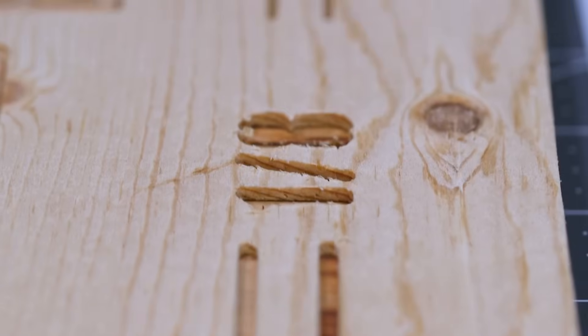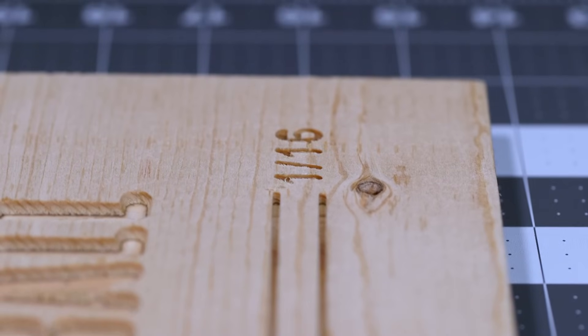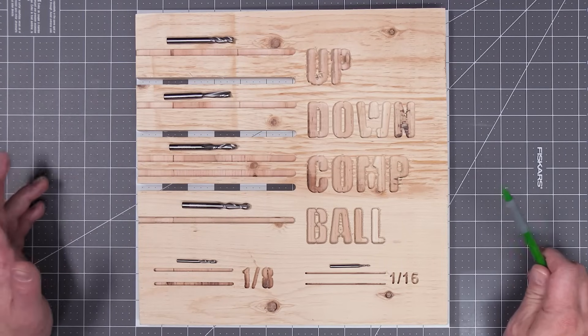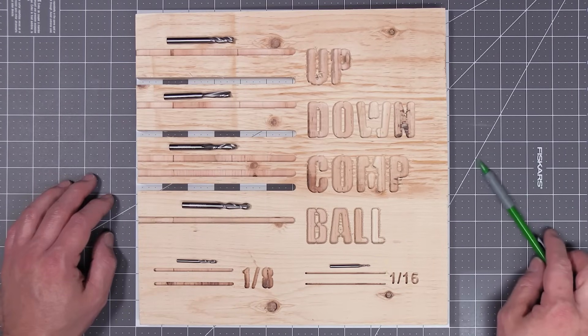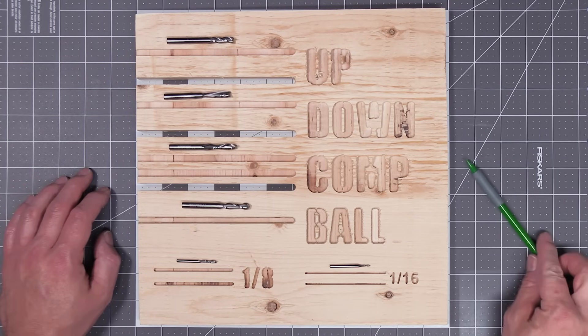Because these bits are smaller, you do have to reduce the feeds and speeds and cutting depth so that you do not break the bits. Because of this, and because these bits simply don't take off as much material per pass compared to the 1 quarter inch bit, it can cause the cut time for your projects to increase, sometimes significantly.